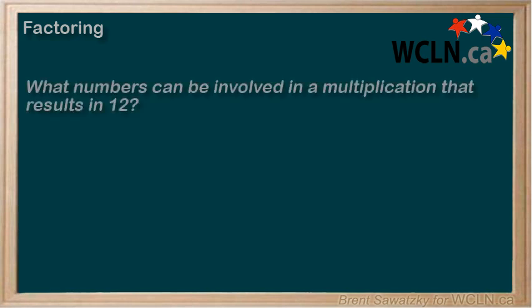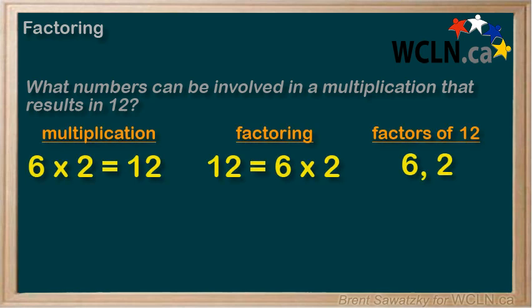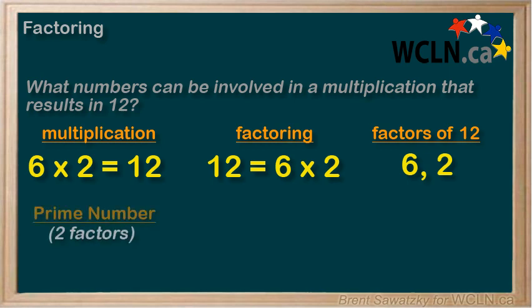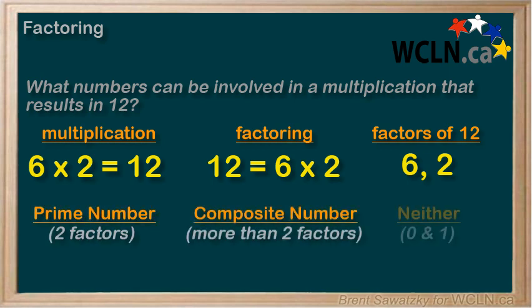In this tutorial, we took our first look at factors. We see that factoring is just the exact opposite of multiplying. In multiplying, we have multiple numbers and we multiply them to get one answer. In factoring, we start with one number and break it down to get multiple factors. We can see that being comfortable with our times tables makes factoring much easier. And once we have our factors, we also learn to identify them as prime numbers, composite numbers, or neither in the cases of 0 and 1.